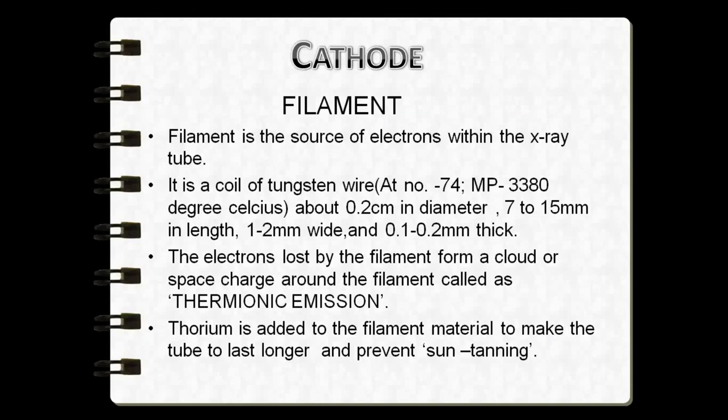The material of choice for the filament is tungsten — a coil of tungsten wire with a higher atomic number of 74 and a melting point of 3380 degrees Celsius. It has been mounted onto two strong, stiff wires which support it and carry the electric current. These mounted wires lead through the glass envelope and serve as a connection to both the low and high voltage electrical source.